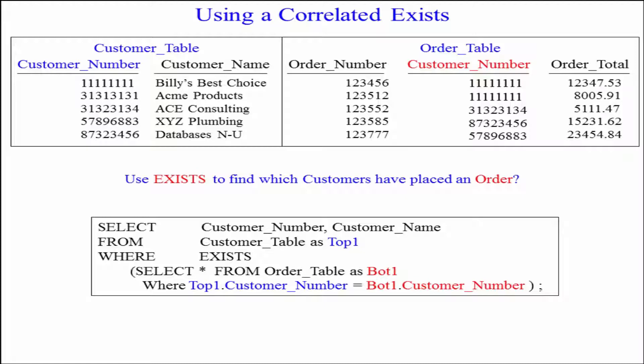So we're going to say, okay, we want to find all customers who placed an order. We'll select the customer number and customer name. I could have selected everything from the customer table as top one. Where exists, and in the bottom query we see select everything from the order table, bottom one,